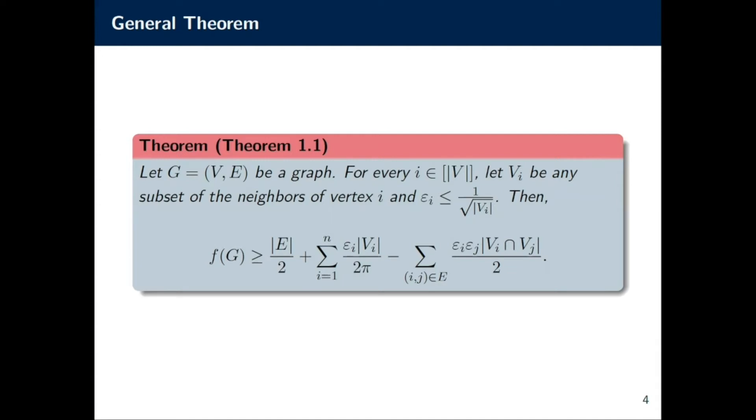One way to think about this, if you parse it correctly, is the surplus is going to be equal to basically a gain for every vertex, which is the second term, plus or rather minus a loss for the intersection, that is the collision between two vertices that have overlap in the neighborhood you chose.